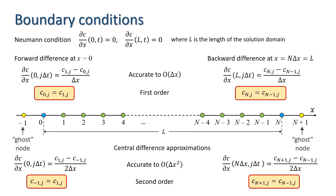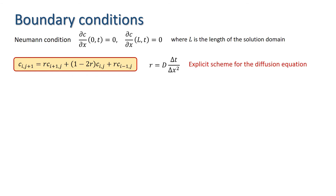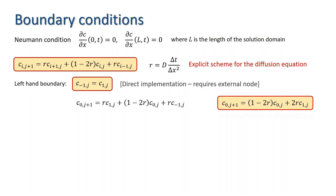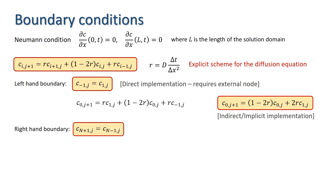Consider the explicit scheme derived earlier. At the left-hand boundary, c_{-1,j} = c_{1,j}. Taking the update equation for i = 0 and substituting for c_{-1,j} yields an expression for c_{0,j+1} in terms of c_{0,j} and c_{1,j}. Similarly, at the right-hand boundary, c_{N+1,j} = c_{N-1,j}, which can be combined with the update equation to eliminate the external node.